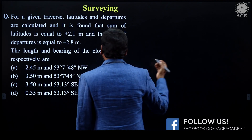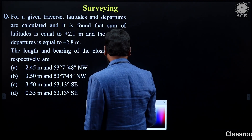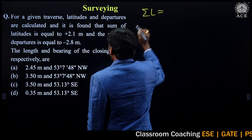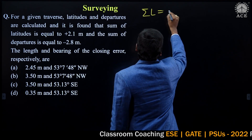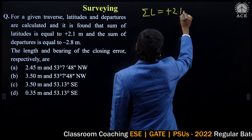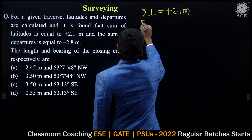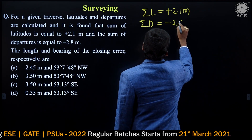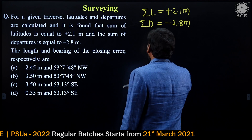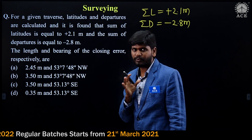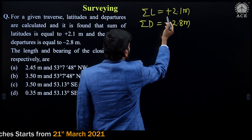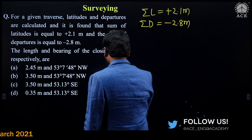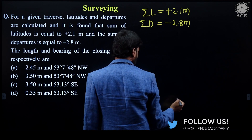First, write the given data. Sum of latitudes is equal to plus 2.1 meters and sum of departures is equal to minus 2.8 meters. Now if you look carefully at the signs of these two values, the signs represent the coordinate quadrant.